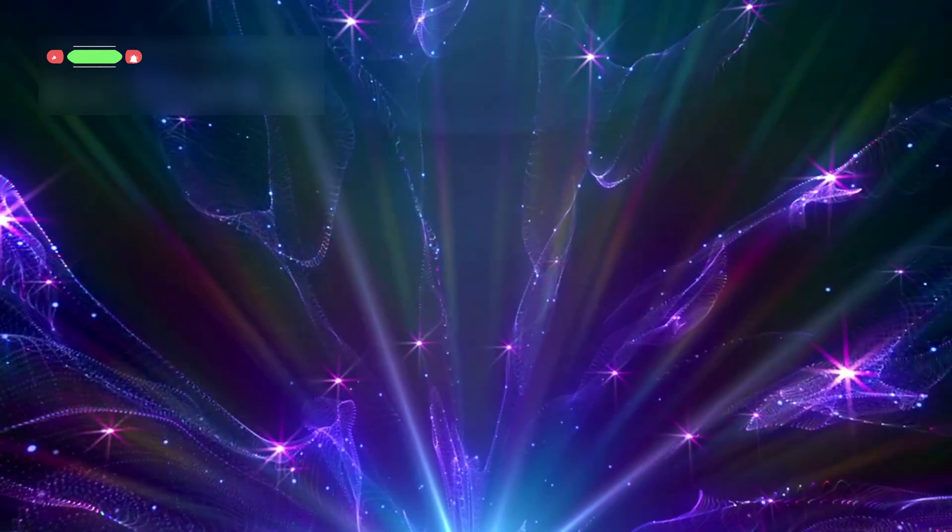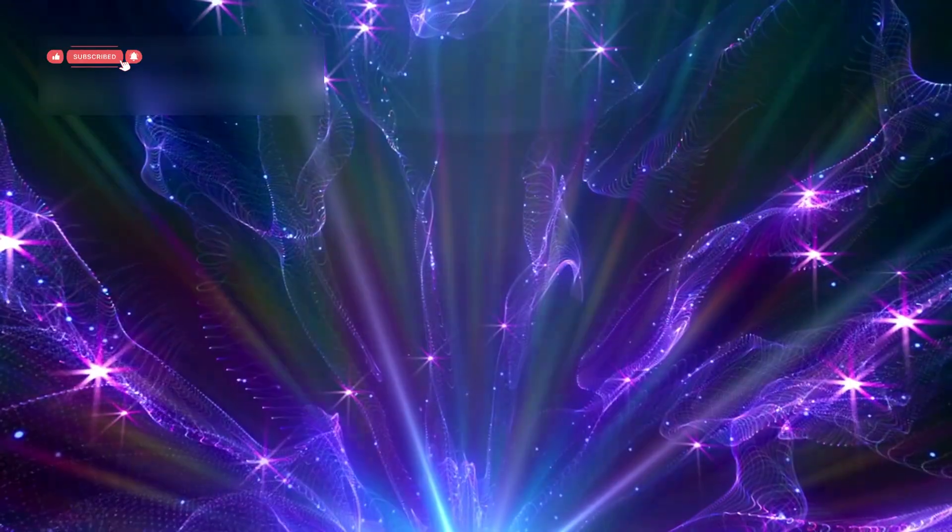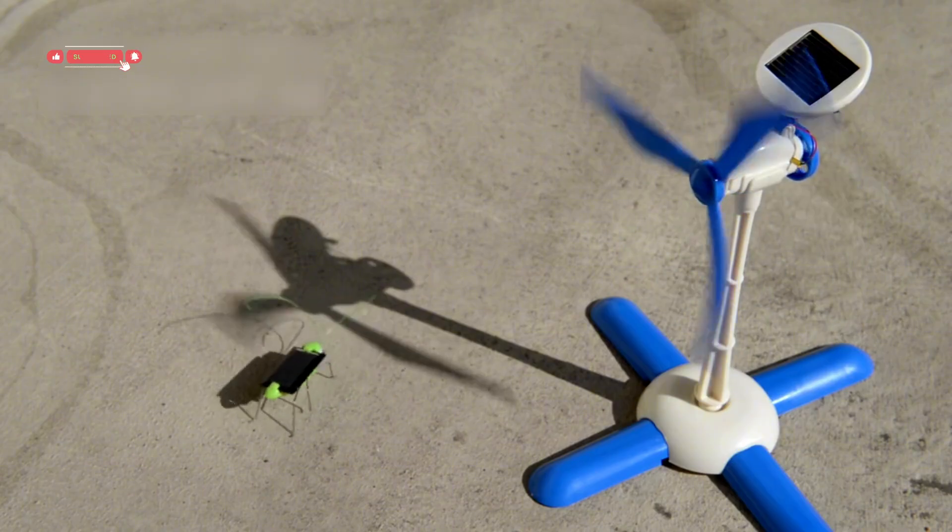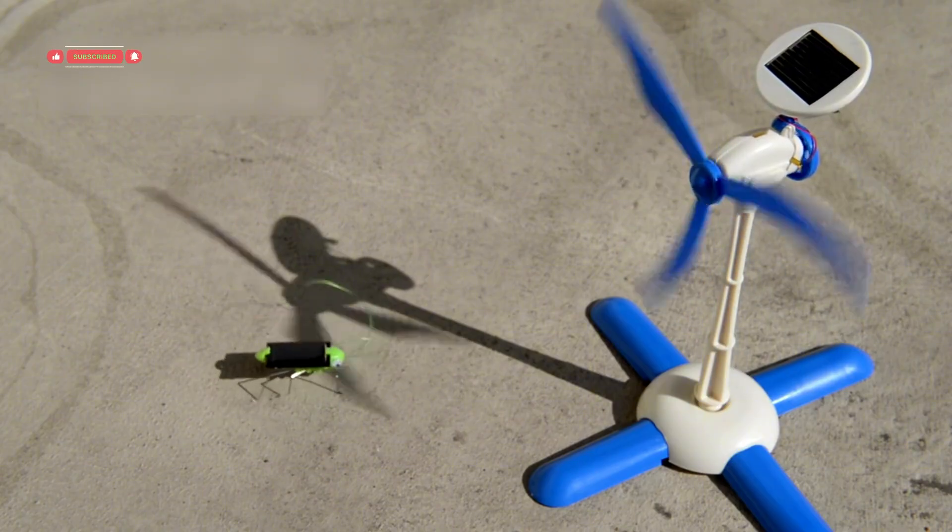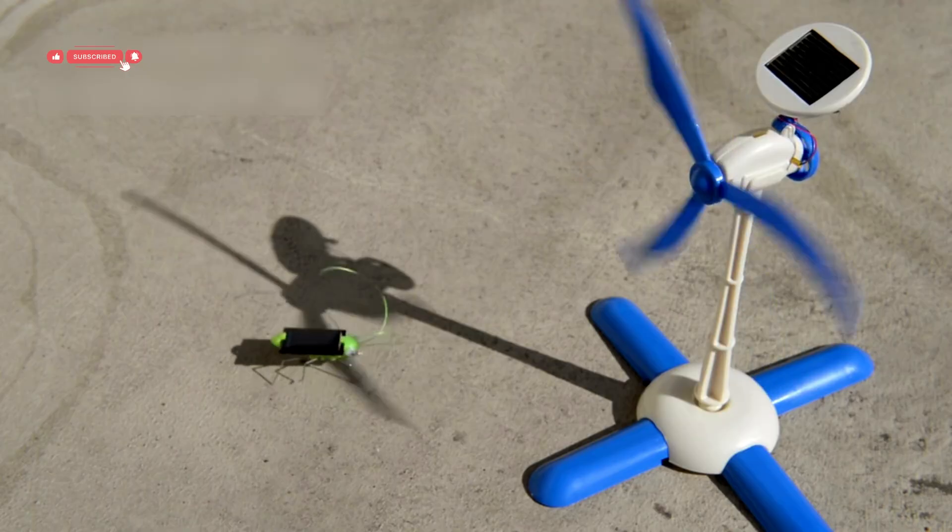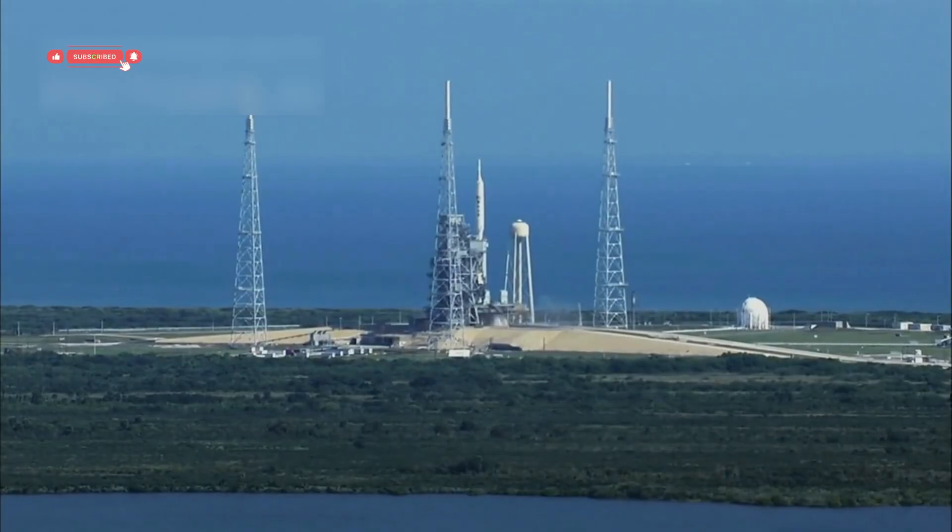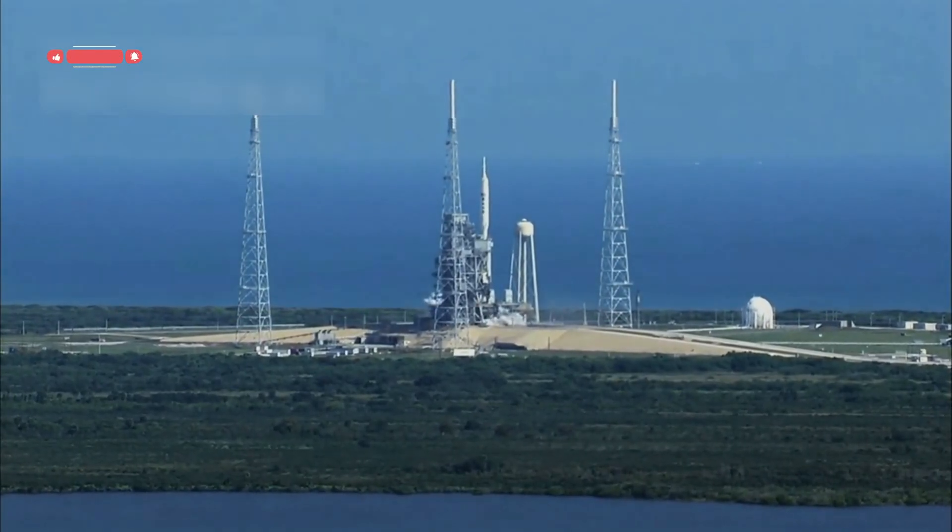For example, Voyager 1's plasma detector was shut off years ago, and Voyager 2's magnetometer was recently switched off. Originally, each probe was expected to last only a few years, but careful power management means they may keep working well into the 2030s. Each faint signal they send back is a small victory for science.